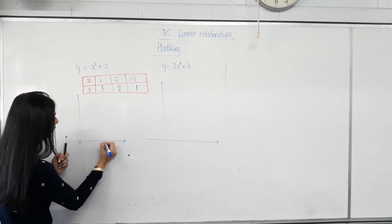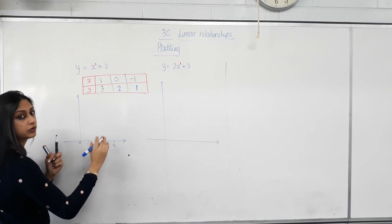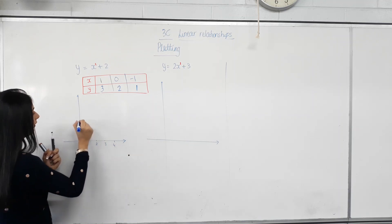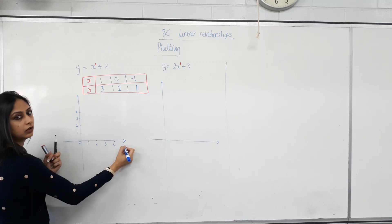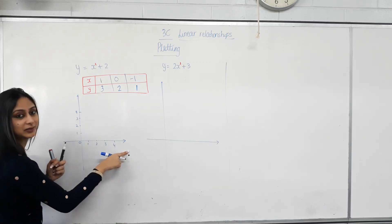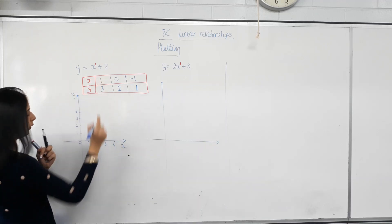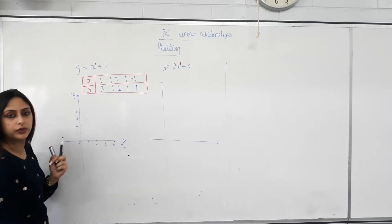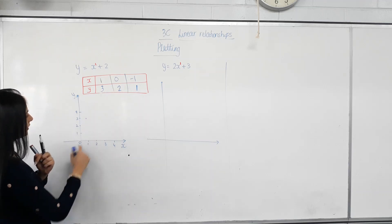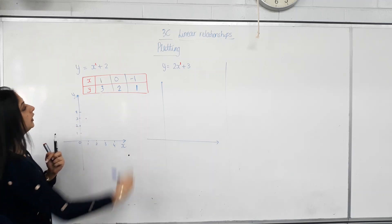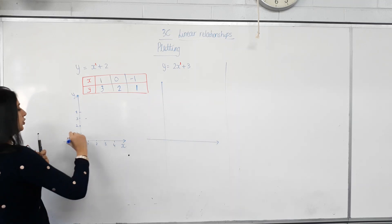So we've done the Cartesian plane before. This should be evenly spaced. Eyes on board. Screens down. And this should be evenly spaced. Which axis is this? X. The independent one. And this is? Y. So when x is 1, y is 3. 1, 3. Is this our first point? Yes. When x is 0, y is 2. X is 0, y is 3. Second point. When x is negative 1, y is 1. And the 2 lie on a straight line.